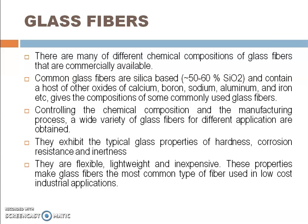Glass fibers are available in different forms by varying the composition of materials like calcium, boron, sodium, and silica. They exhibit typical glass properties such as hardness, corrosion resistance, and inertness, and are flexible, lightweight, and inexpensive. These properties make glass fibers the most common type of fiber used for low-cost industrial applications. Different classifications include E glass (electrical), S glass (strength), C glass (corrosion resistance), M glass (high modulus/stiffness), A glass (high alkali soda-lime glass), and D glass (low dielectric constant).